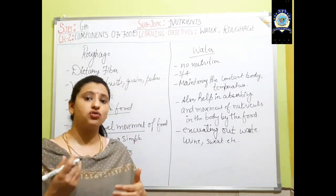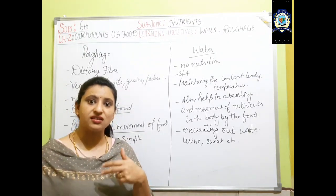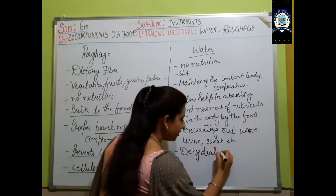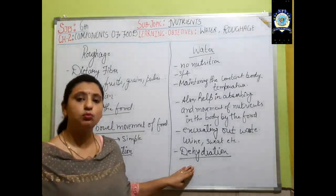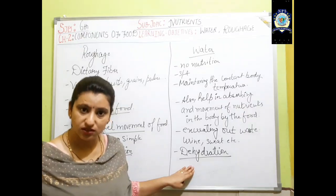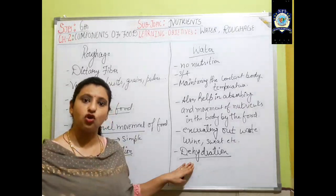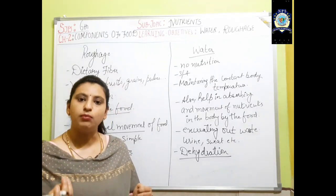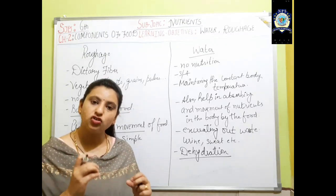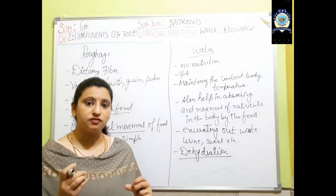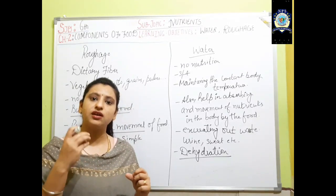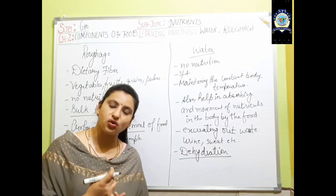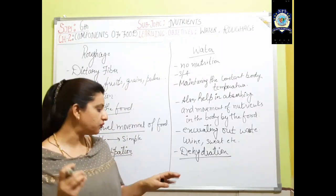When there is excess loss of water from the body — when we are not drinking enough — that condition is called dehydration. If the body undergoes dehydration, it can lead to severe conditions like diarrhea with loose motions. Water is lost from the blood, making the blood thicker, which leads to severe pain and cramps. If blood becomes too thick and cholesterol levels rise, it can even lead to a heart attack. Severe diseases can occur if dehydration is prolonged.